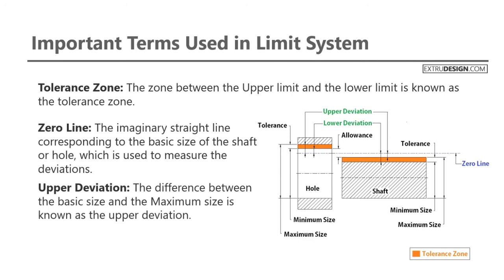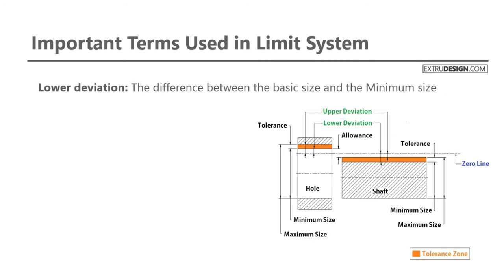Upper deviation: the difference between the basic size and the maximum size is known as upper deviation. Lower deviation: the difference between the basic size and the minimum size is known as lower deviation.